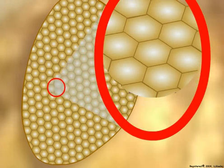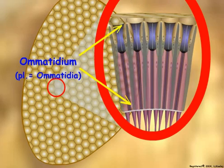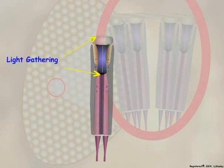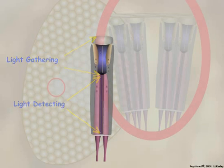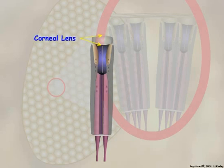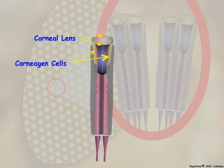Let us look at the detailed structure of an ommatidium. An ommatidium is divided into light-gathering and light-detecting components. The corneal lens is transparent cuticle that is secreted by two modified epidermal cells called corneagen cells. Corneagen cells secrete the corneal lens when new cuticle is formed at the time of the molt.